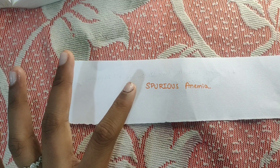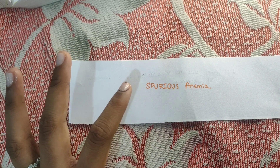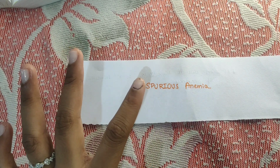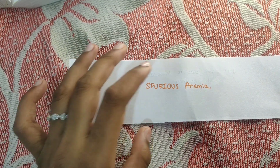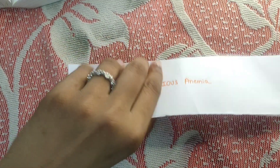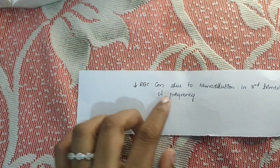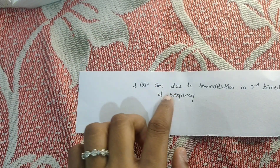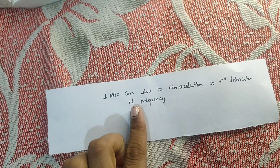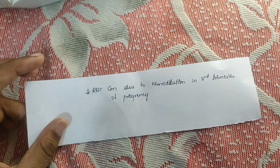So there will be dilution of the blood, and because of this dilution there will be a reduction in the RBC count per deciliter. This anemia due to dilution is known as spurious anemia — a decrease in RBC concentration due to hemodilution in the third trimester of pregnancy.